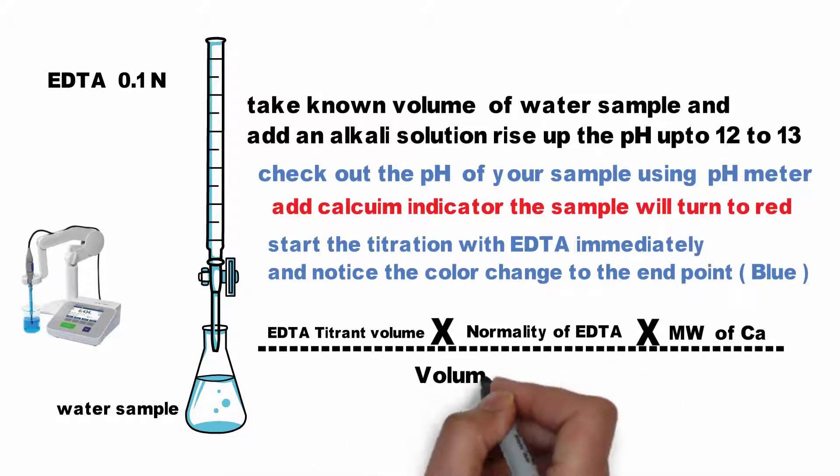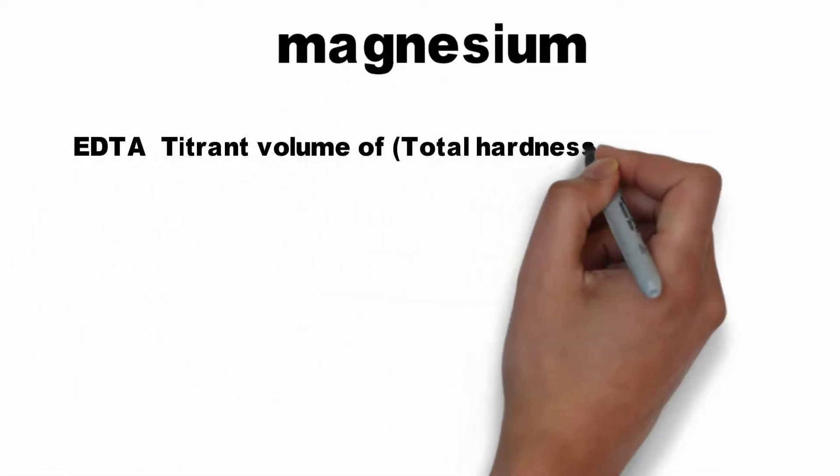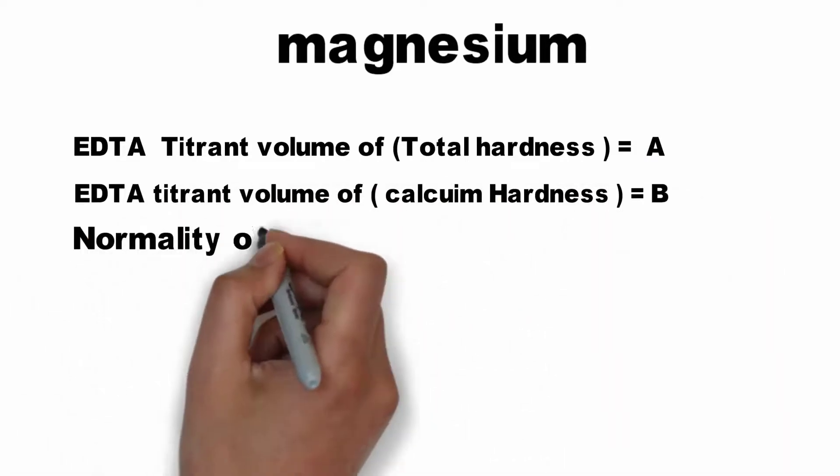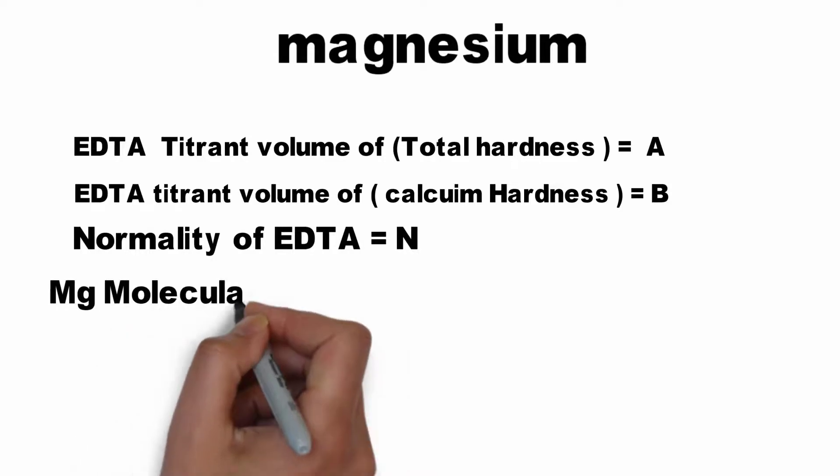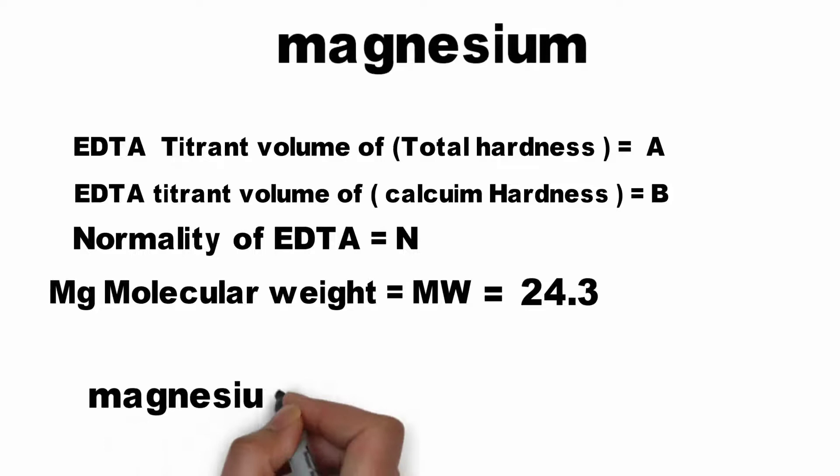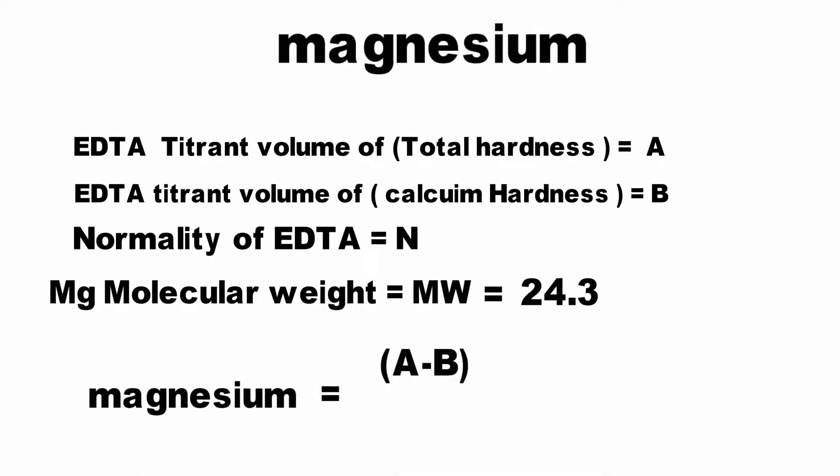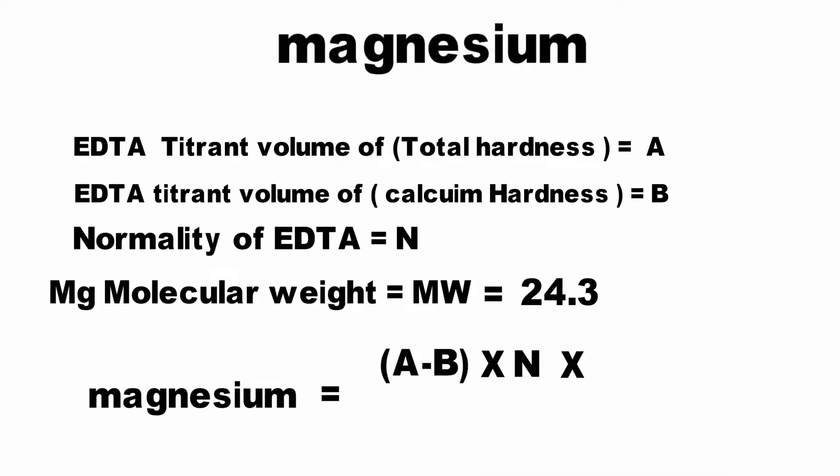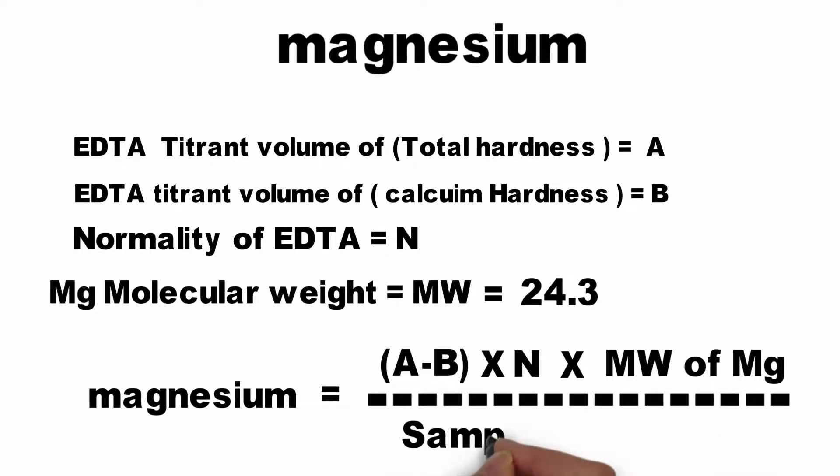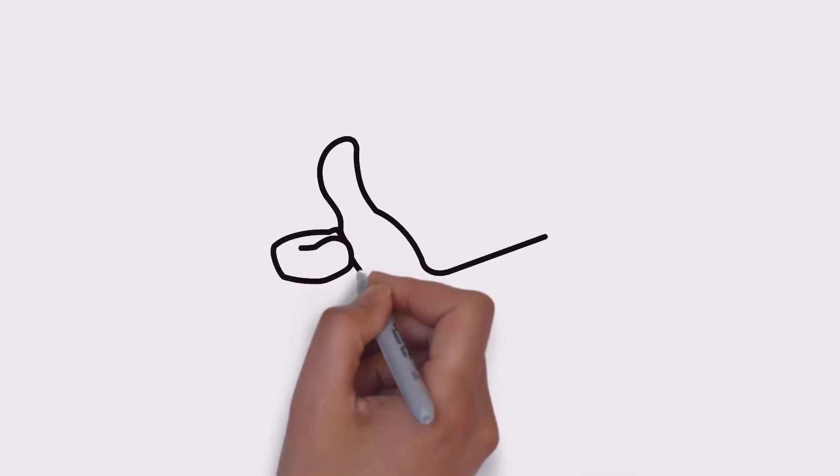You already know how to calculate total hardness, and you just learned how to calculate calcium hardness. So let's find out the magnesium hardness. Magnesium hardness equals the EDTA titrant volume of total hardness minus the EDTA titrant volume of calcium hardness, times the normality of EDTA, times the molecular weight of magnesium, divided by the sample volume.